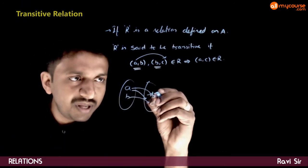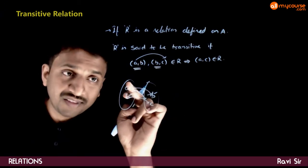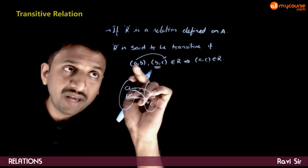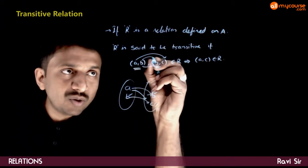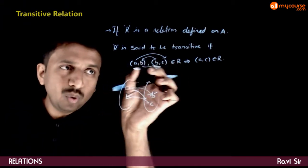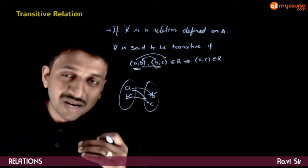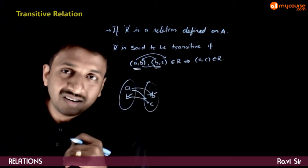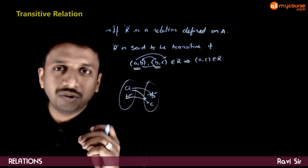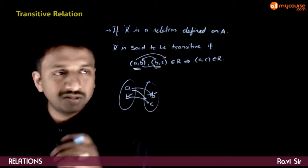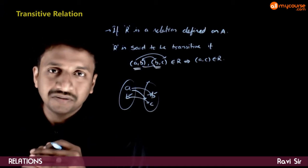Note that the B in both ordered pairs has to be the same element. If two ordered pairs of the form (A, B) and (B, C) are present in the relation R, then (A, C) should also belong to R. This is the definition of a transitive relation.